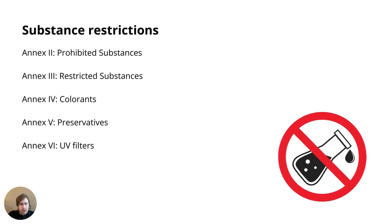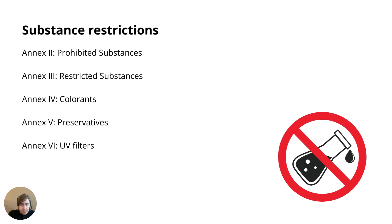A cornerstone of the regulation is the substance restrictions, which you find in Annex 2, 3, 4, 5, and 6. Annex 2 lists prohibited substances — these cannot be included in your bill of substances. Annex 3 lists restricted substances that can be used for some product types, such as hair care products, or cannot be used for certain product types. You need to understand these restrictions — Annex 3 is absolutely crucial.